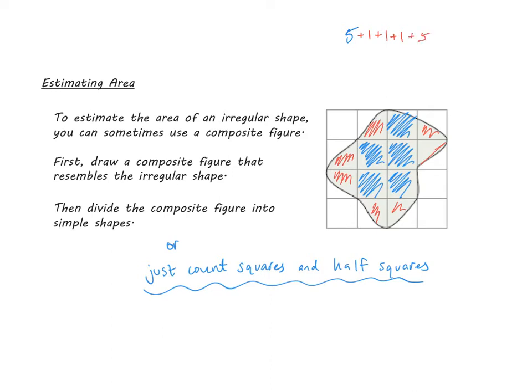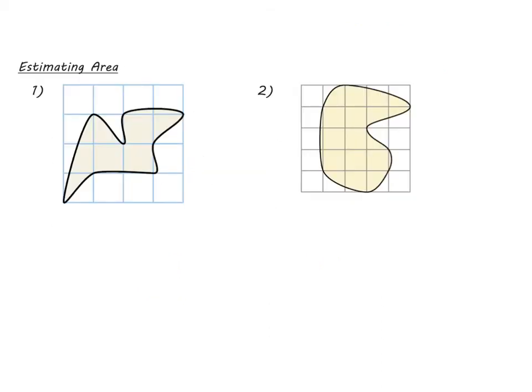So the total area of this figure is about five plus one plus one plus one, so eight point five units squared. We probably would have gotten the same answer if we divided this up into triangles and rectangles, but counting the squares was easy and kind of fun.